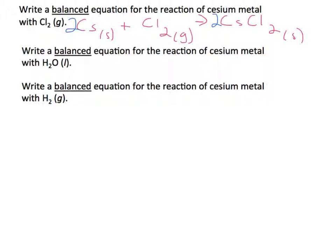Alright, we can go to the next one which says write a balanced equation for the reaction of cesium metal with water. So here we have cesium metal, which is a solid, plus H2O, which is going to be a liquid. So we basically have a metal plus water,